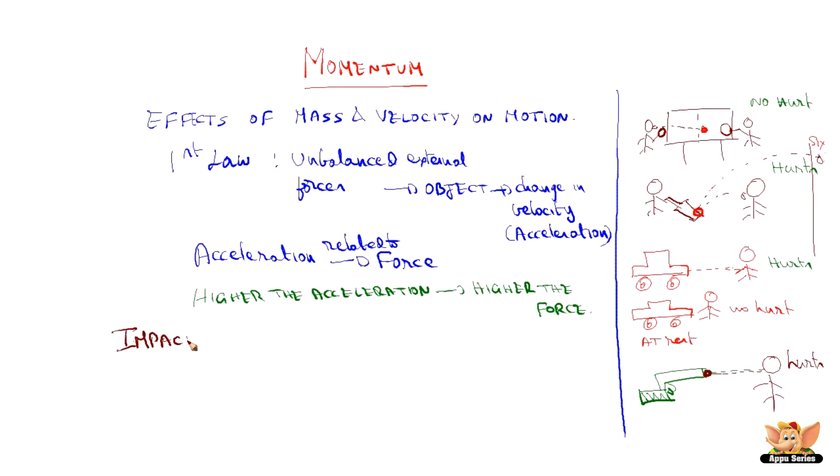So, we understand that impact produced by an object depends on mass and velocity of the object. This impact, Newton named as momentum. Hence, the momentum is defined as the combination of this mass and velocity, which in equation form Newton has defined as mass into velocity.